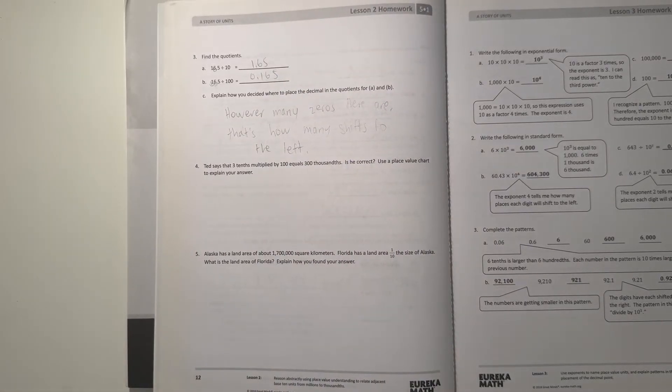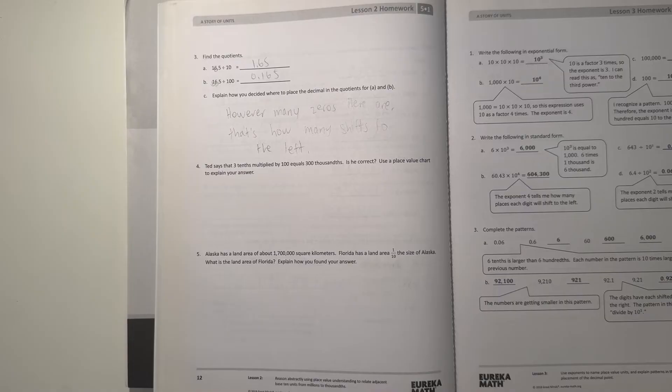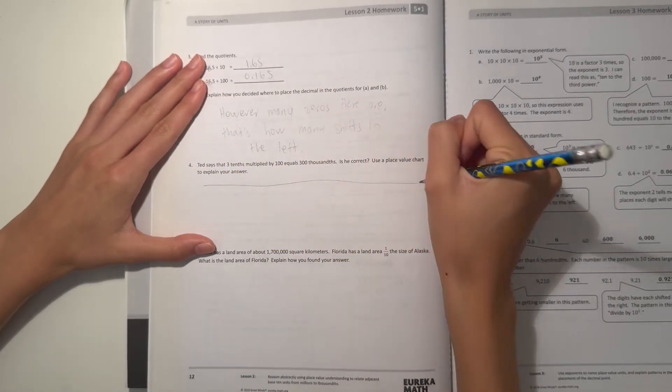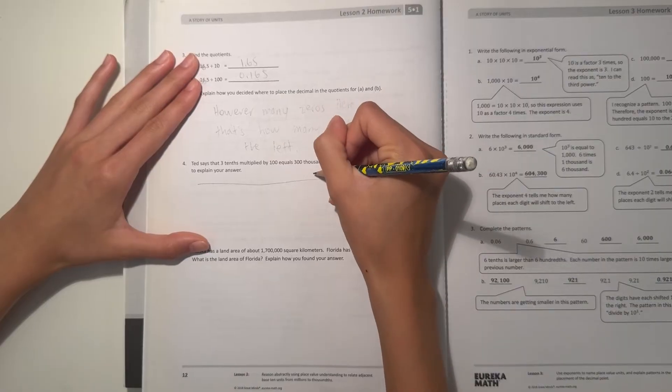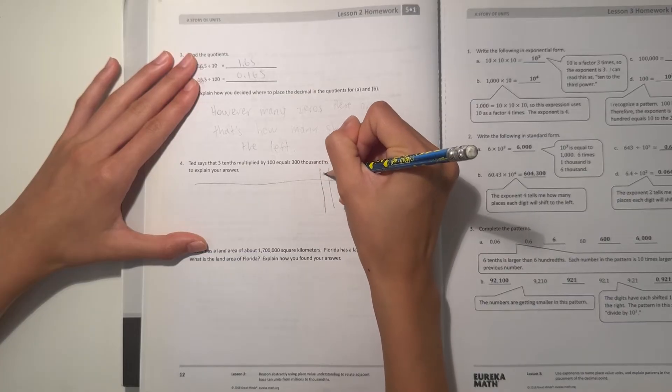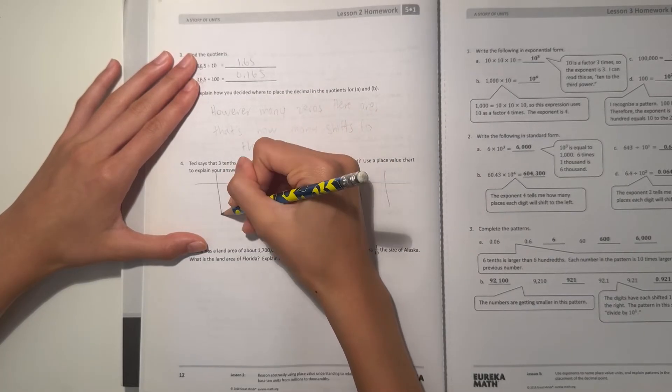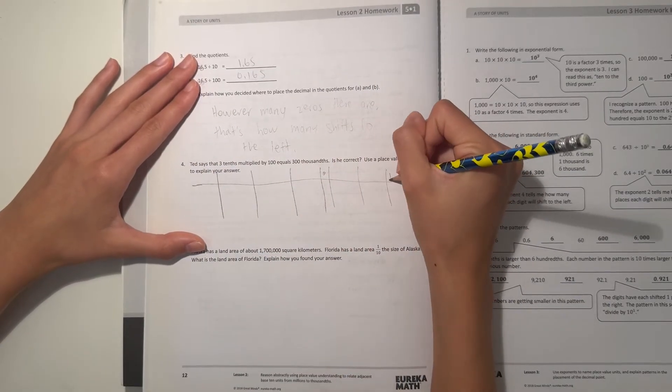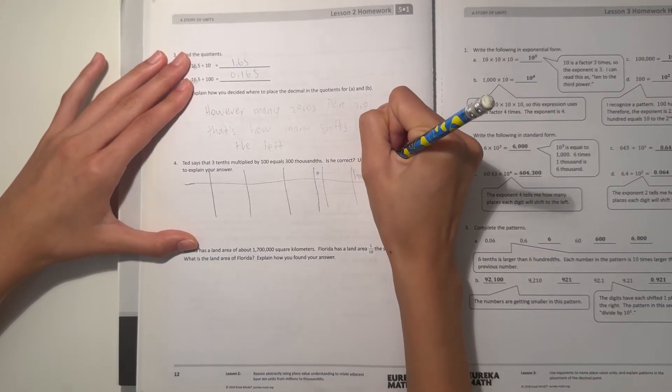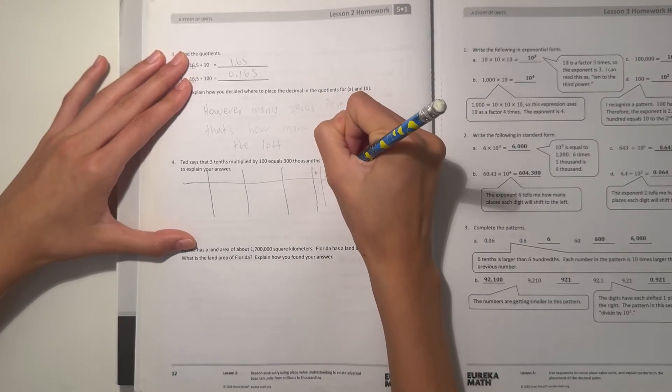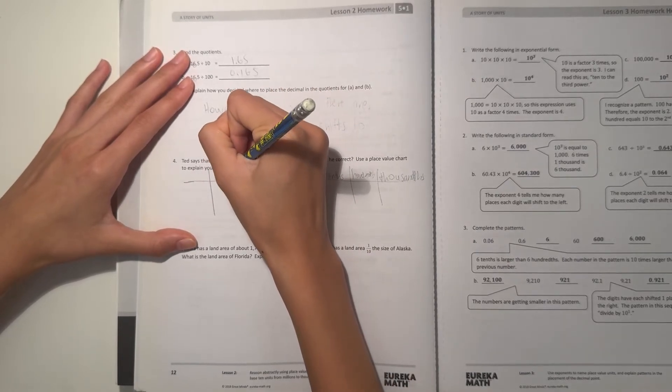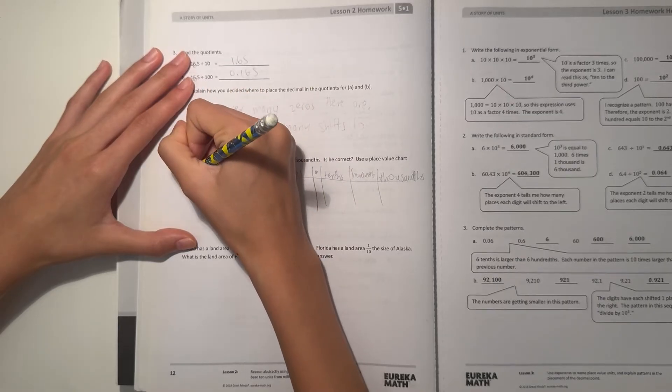And number four, Ted says that 3 tenths multiplied by 100 equals 300 thousandths. Is he correct? Use the place value chart to explain your answer. So let's do our place value chart. So we have our thousandths, hundredths, tenths, decimal place, ones, tens, and hundreds and thousands.